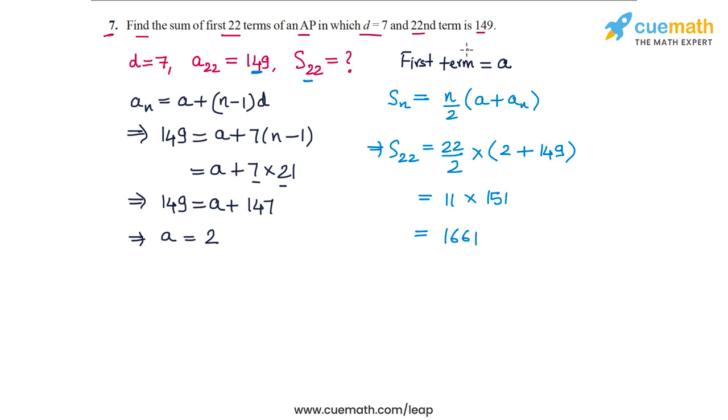This is equal to 1661. So the answer to question 7 is that the sum of the first 22 terms is equal to 1661.